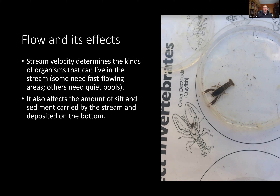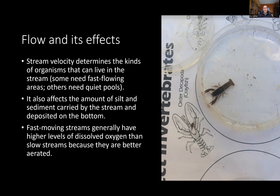Flow affects silt and sediment deposition. In a riffle or rapidly flowing area you don't find much silt on the bottom, but in a slower portion of the creek, the silt the water has been carrying gets deposited. Flow also affects dissolved oxygen just through the physical process of moving and tumbling water.